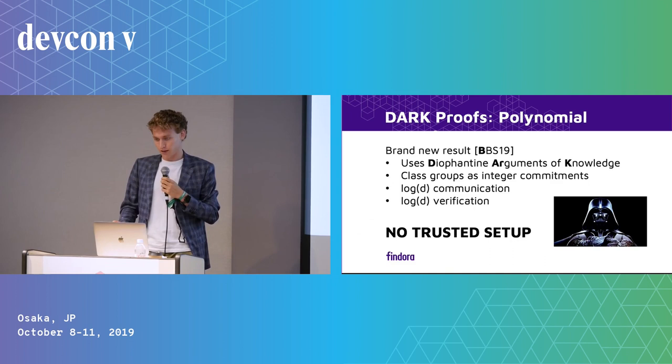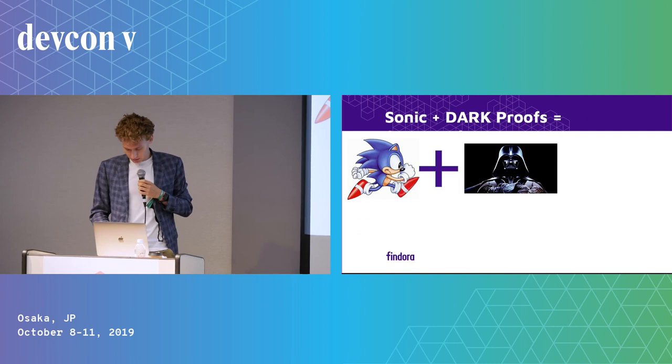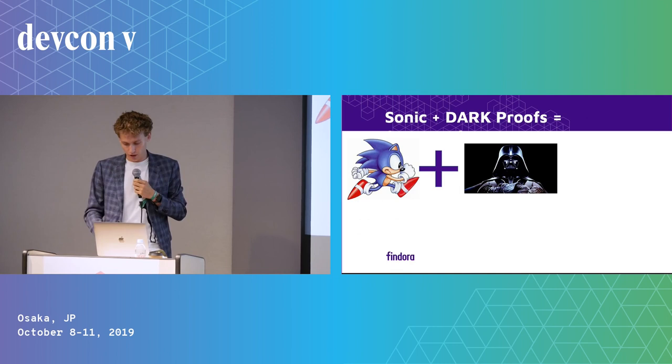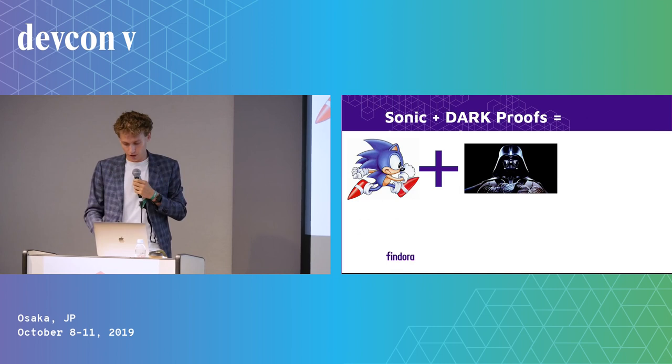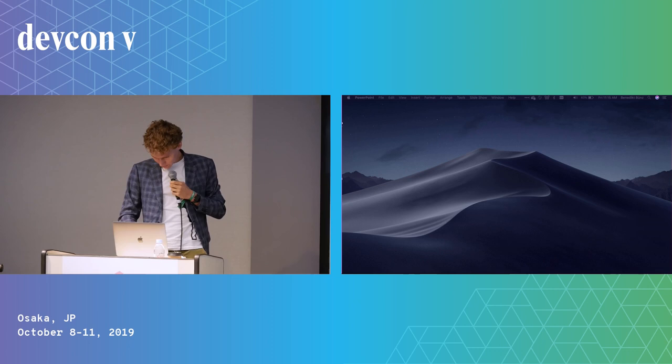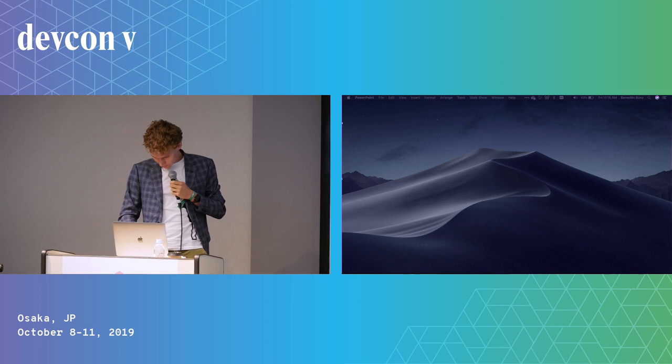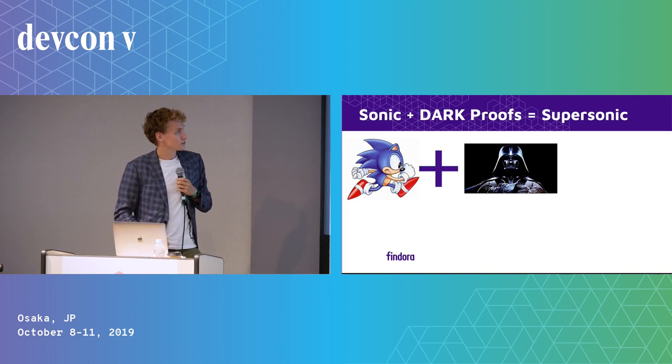We have Sonic, and we plug in these new DARK proofs to get Supersonic — the first SNARK with short proofs and no trusted setup. The proof size is less than 10 kilobytes and the verification time is less than 100 milliseconds, so it's very nice.